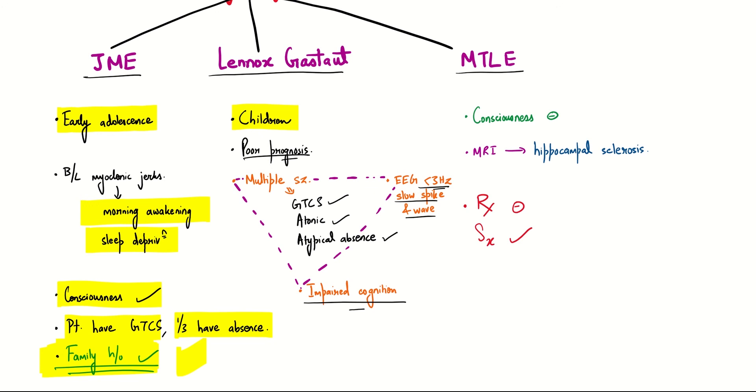In mesial temporal lobe epilepsy, consciousness is absent, which is a differentiating factor from JME in which consciousness is present. In MTLE, if you see the MRI, it will have the very characteristic hippocampal sclerosis. It is very important to see the MRI because if you detect MTLE quickly, we can do surgery, as there is no medical treatment available - only surgical options. I would like you to check the table for MTLE given in Harrison's, which has a lot of info regarding the patient history.